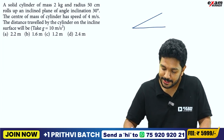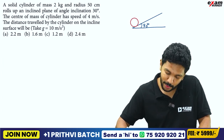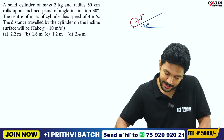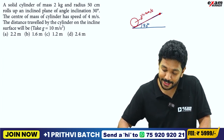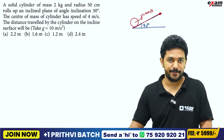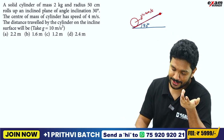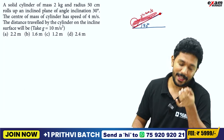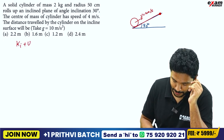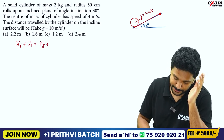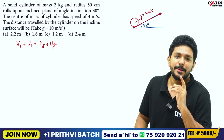On a 30-degree inclined plane, a solid cylinder is rolling. The speed of the center of mass is 4 m per second. To solve this, we apply conservation of mechanical energy because friction does no work here and mechanical energy is conserved. Initial kinetic energy plus initial potential energy equals final kinetic energy plus final potential energy.